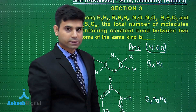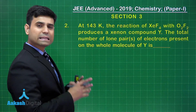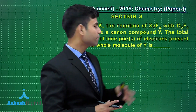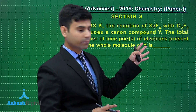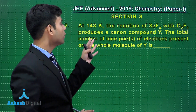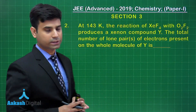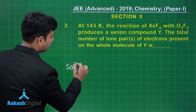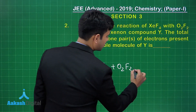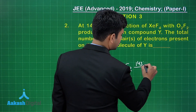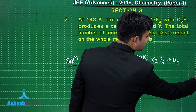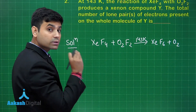Now let's move to the next question. It says: at 143 Kelvin, the reaction of XeF4 with O2F2 produces a xenon compound Y. The total number of lone pairs of electrons present in the whole molecule of Y — which is XeF6 — is to be found. XeF4 reacts with O2F2 at 143 Kelvin to give XeF6 plus O2. Now let's draw the structure of XeF6, which is distorted octahedral.